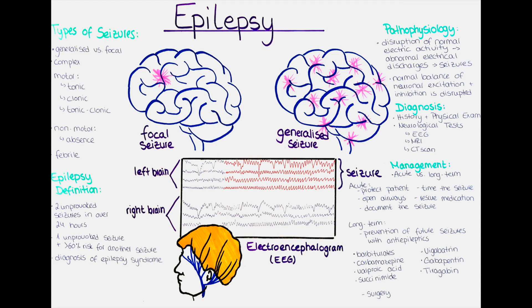Second, time the seizure: observe and note its duration as well as any changes in behavior or consciousness. Third, maintain an open airway: place the patient on their side to prevent choking on saliva or vomit, and loosen any tight clothing around the neck. Fourth, administer rescue medication: if the patient has a history of prolonged seizures or status epilepticus, administer a rescue medication such as benzodiazepines.